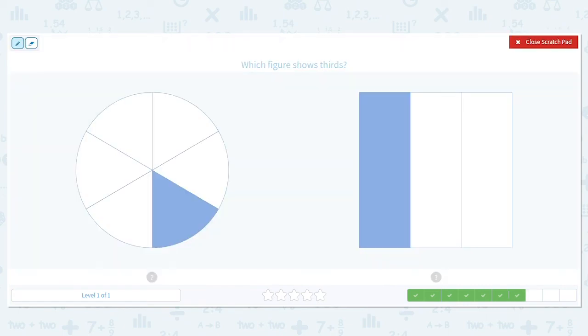This time we want to know thirds. Thirds. Three. So looking at our circle, how many total pieces do we have? One, two, three, four, five, six. So this is broken into thirds because each piece is one third. There are three equal pieces.